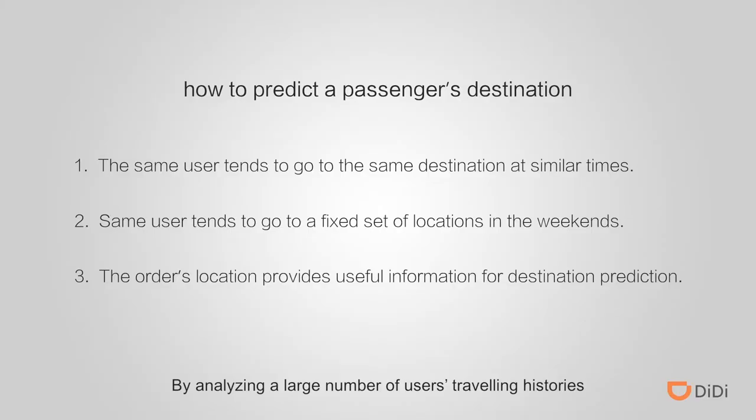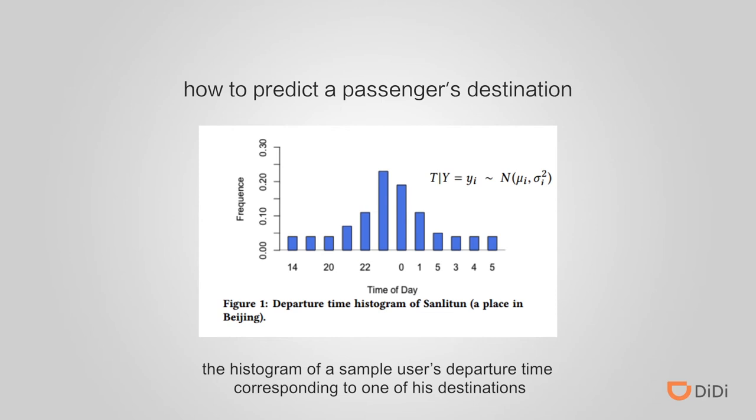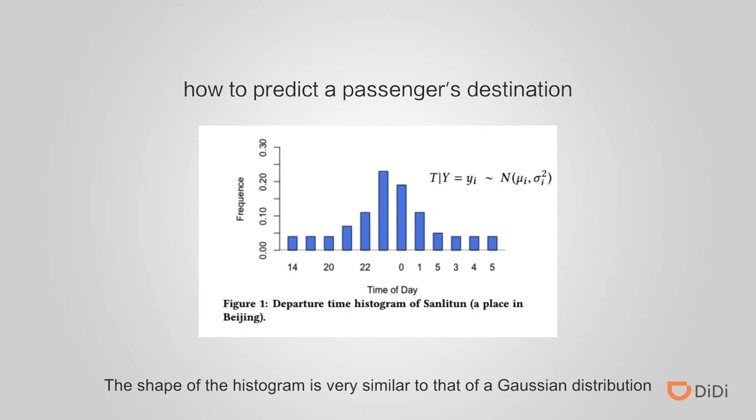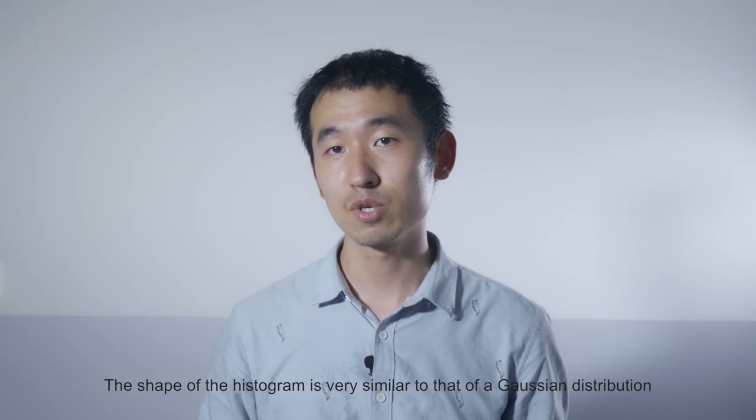By analyzing a large number of users' traveling history, we have discovered several interesting patterns. This picture shows the histogram of a sample user's departure time corresponding to one of his destinations. The shape of the histogram is very similar to that of a Gaussian distribution.